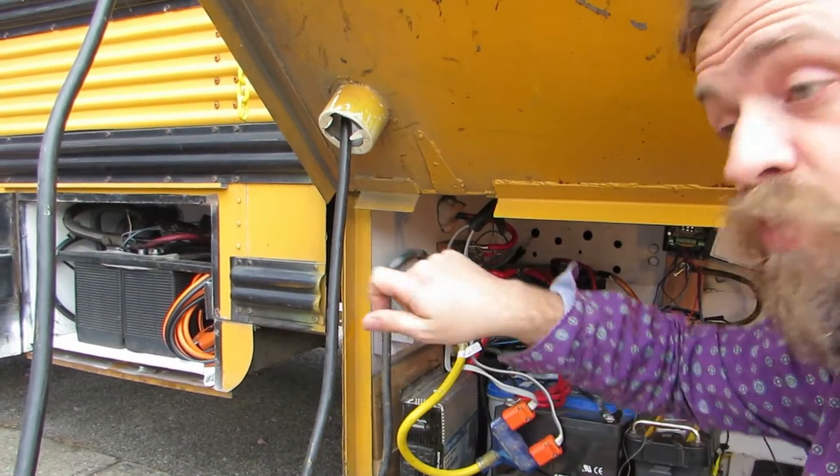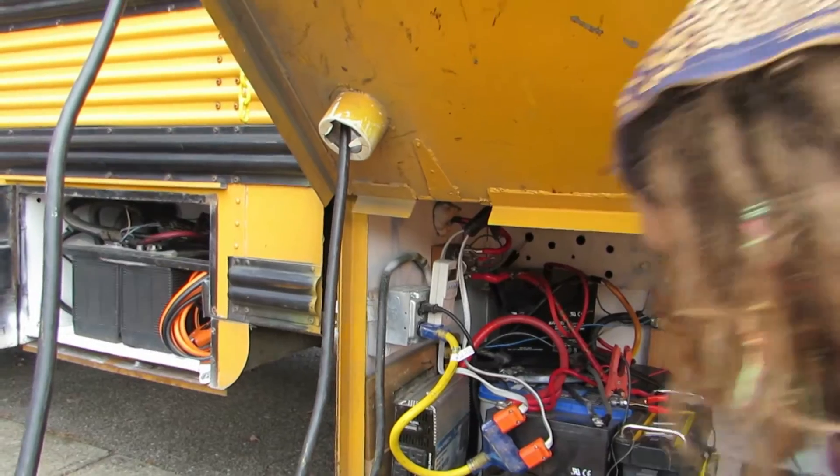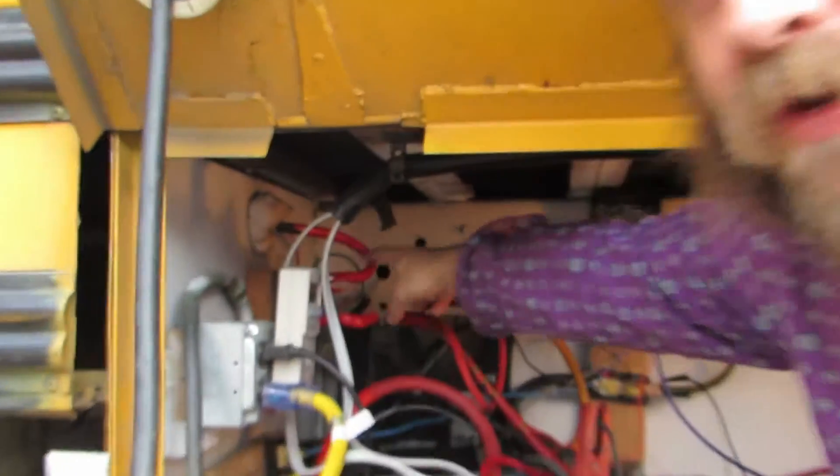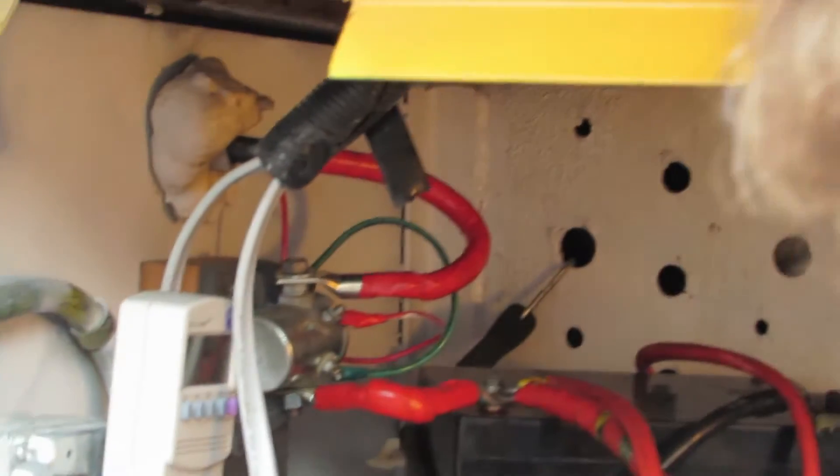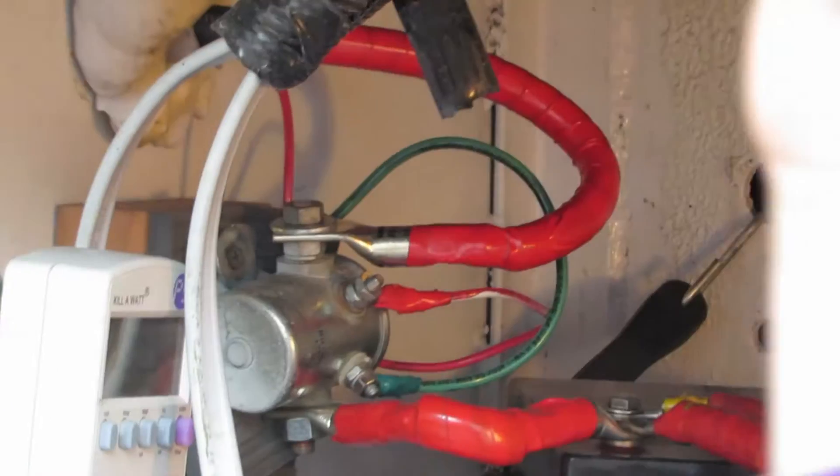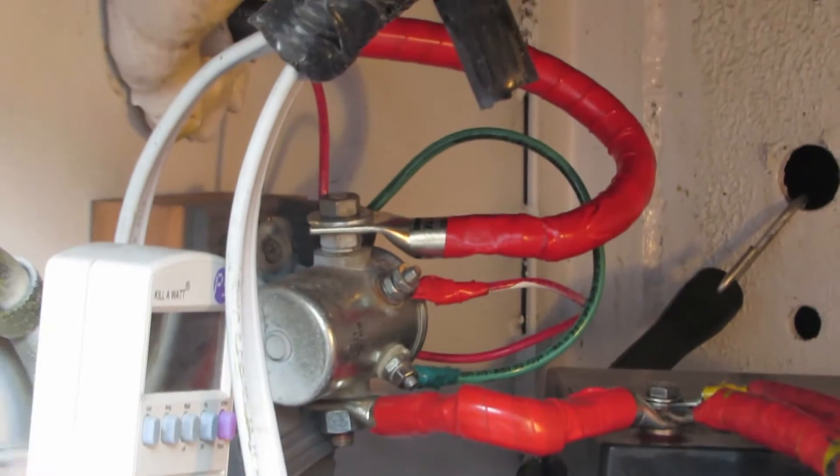However, once we turn that key, some voltage comes through this little tiny red wire here, and that causes the solenoid to unite the two systems. So once the key is turned, the bus is running, we're going down the road,